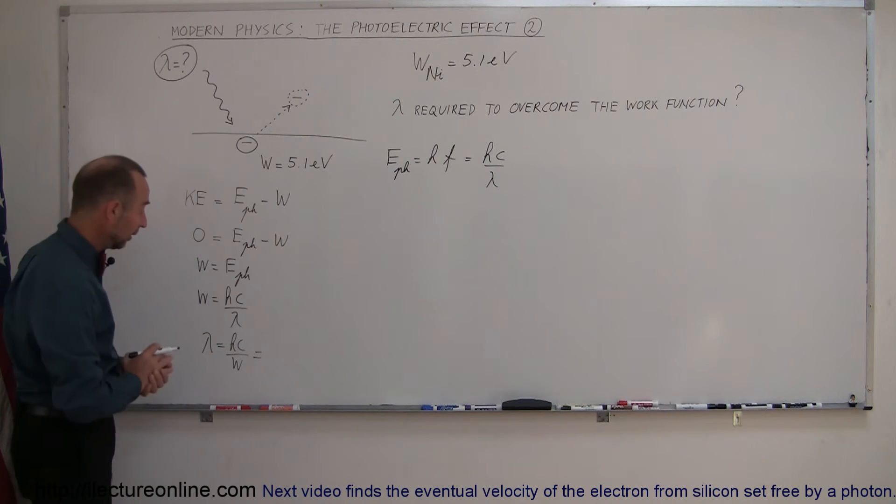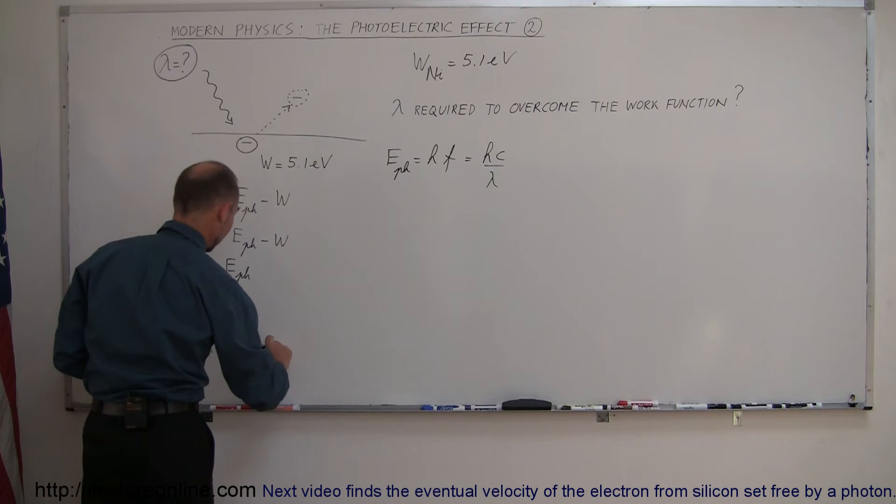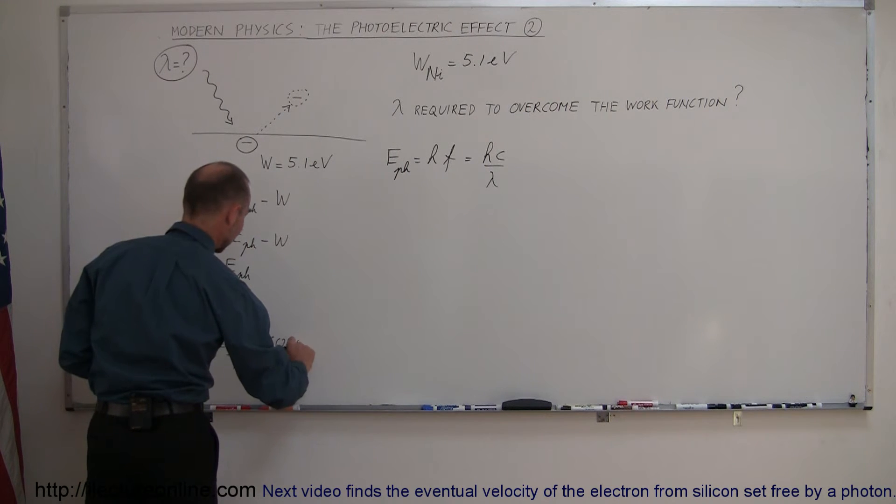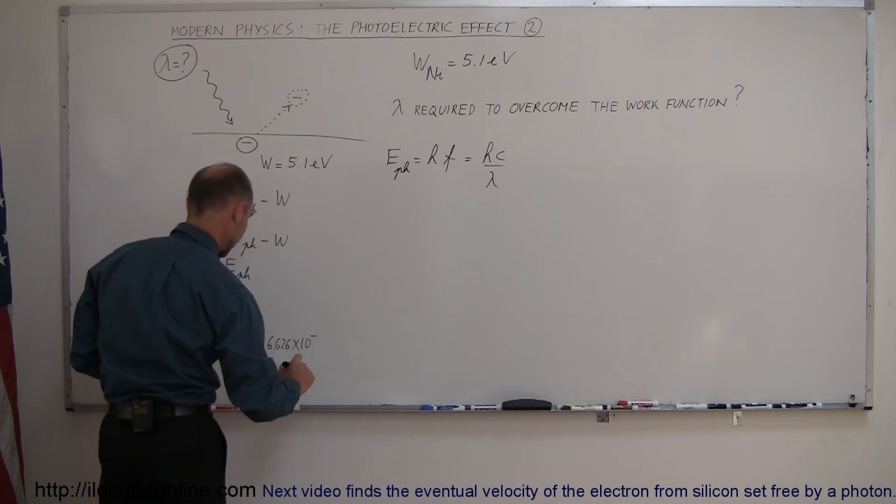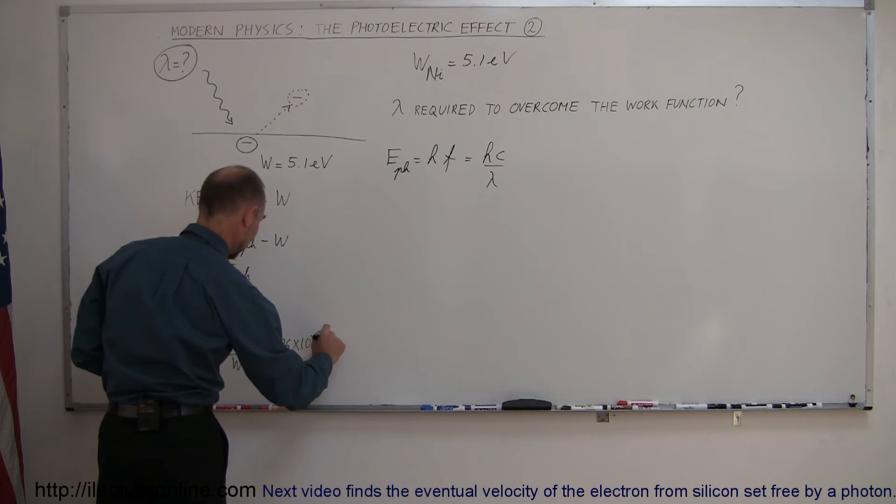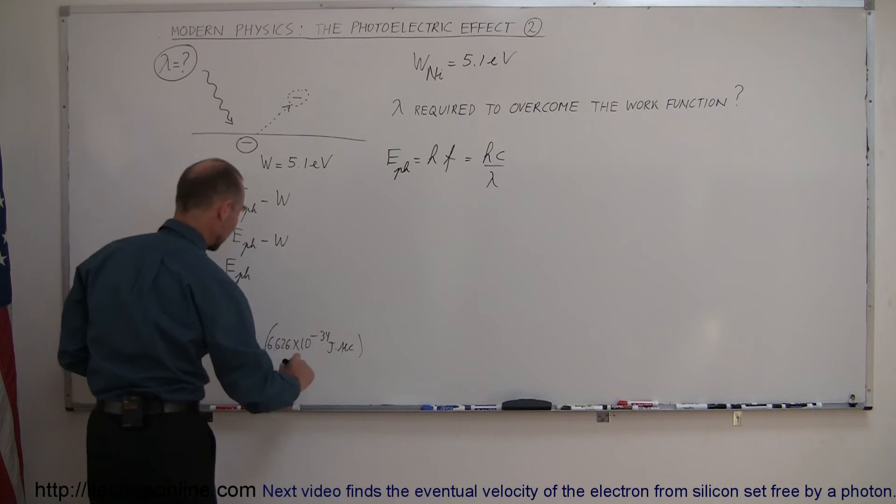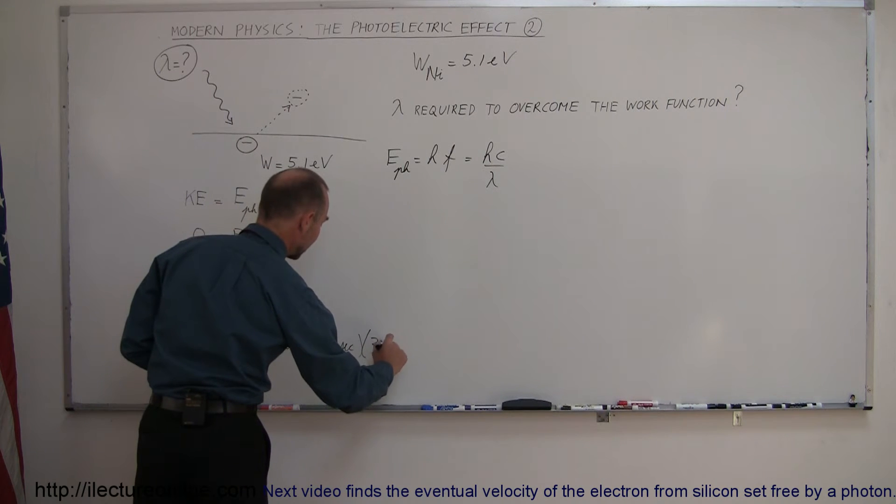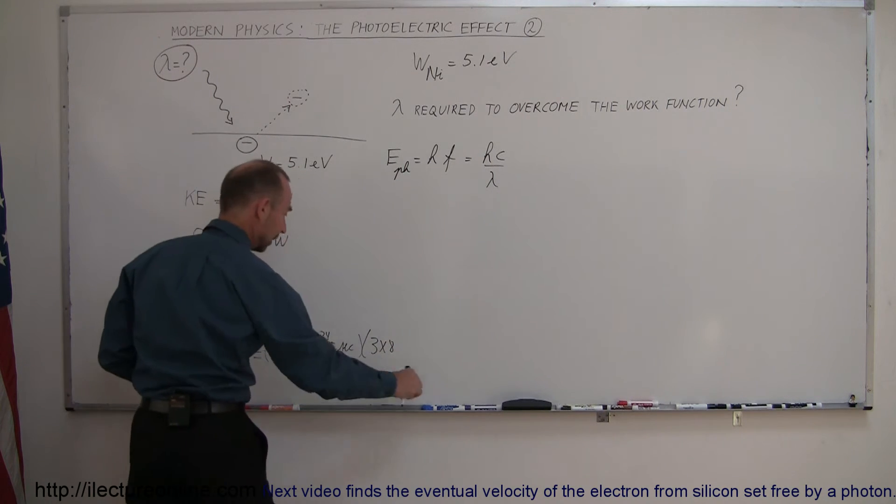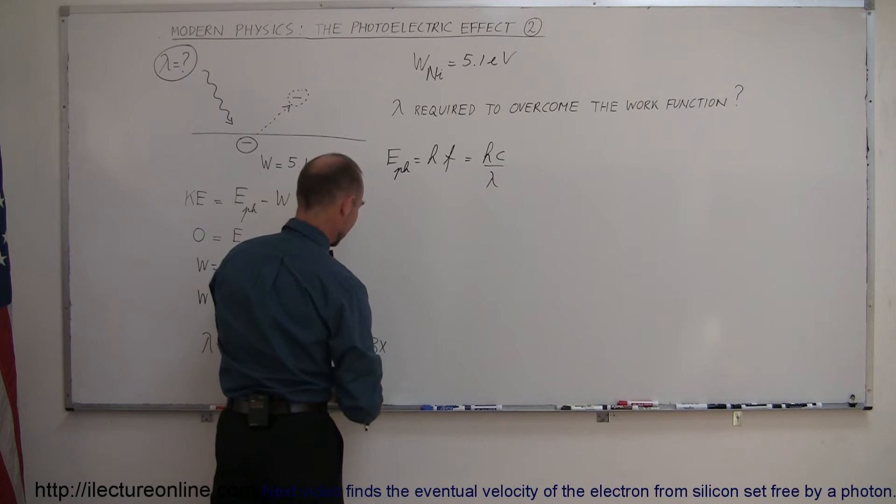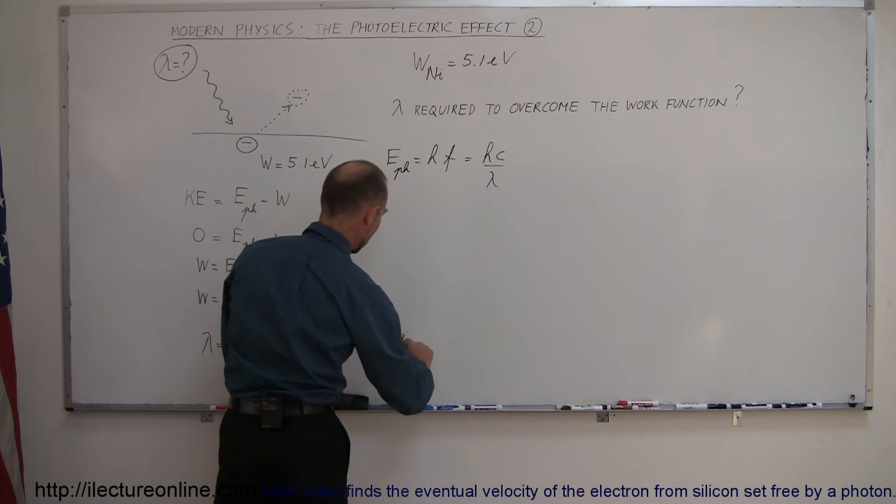Now all we have to do is plug in what those are. Planck's constant is 6.626 times 10 to the minus 34 joules times seconds. Speed of light, 3 times 10 to the 8, I'm getting a little ahead of myself here, times 10 to the 8 meters per second,